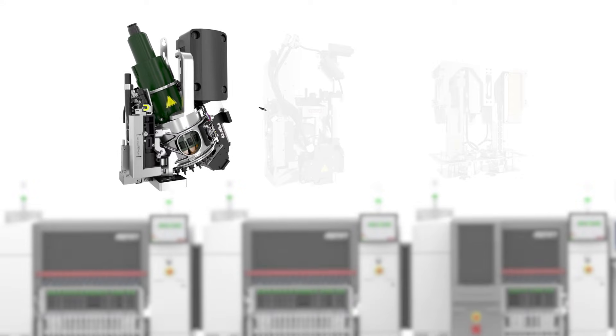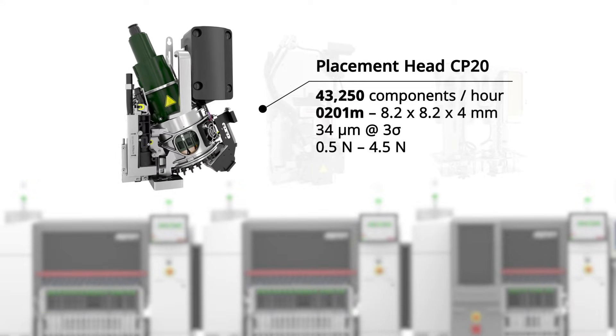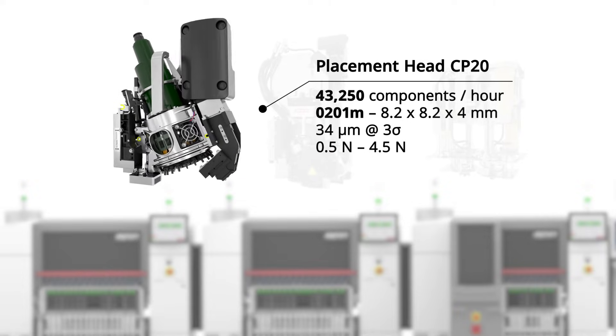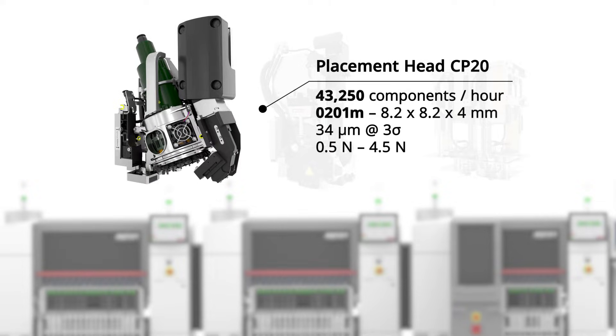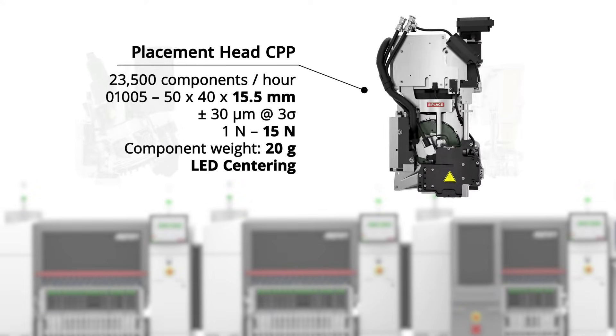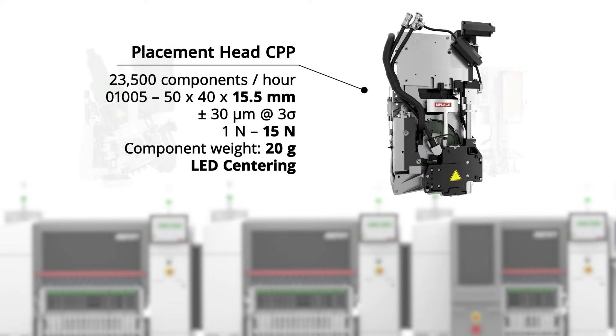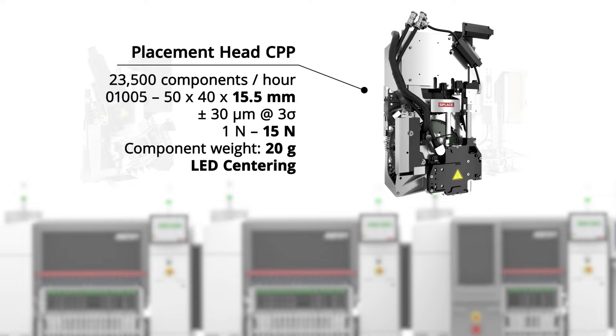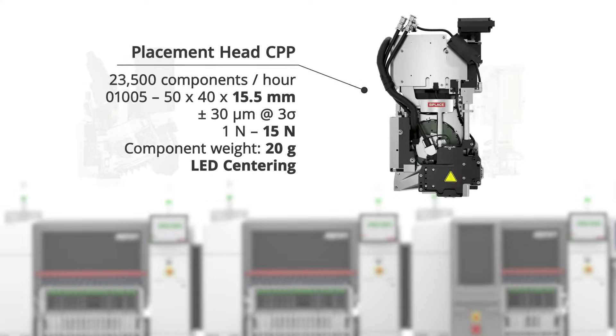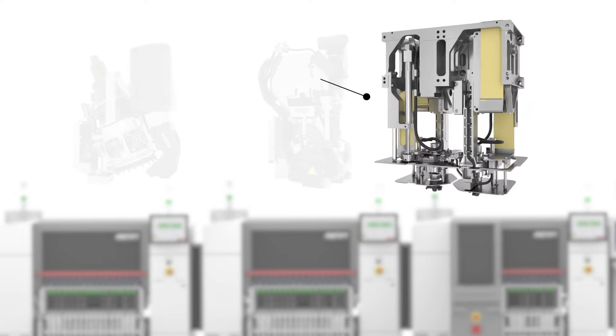The placement head CP20 delivers exceptional performance, achieving more than 43,000 components per hour even when placing metric 0201 components with the highest level of precision. The ability to switch between collect and place, pick and place, or mixed mode makes the placement head CPP the perfect choice for ultimate flexibility and line balancing.